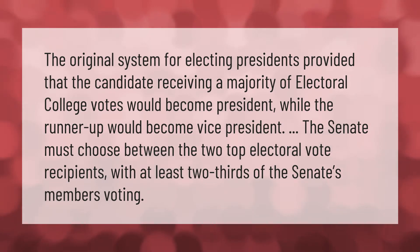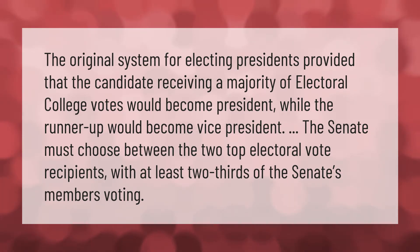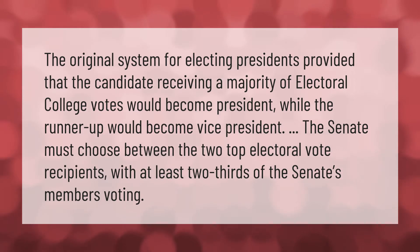The original system for electing presidents provided that the candidate receiving a majority of electoral college votes would become president, while the runner-up would become vice president. The senate must choose between the two top electoral vote recipients, with at least two thirds of the senate's members voting.